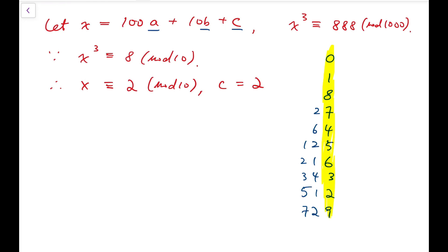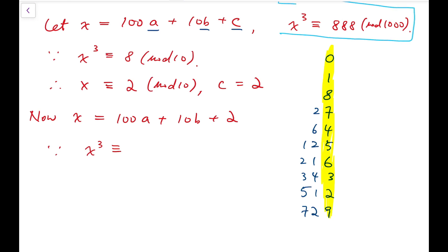Now we can move on to solve the next digit, which is b. So from this result, I can say that x is equal to 100a plus 10b plus 2. And I will consider mod 100 instead. Again, from the same condition, I can say that x cubed is congruent to 88 mod 100. And we know that x is congruent to 10b plus 2 mod 100. So I can simply expand 10b plus 2. I can ignore the 100a term.